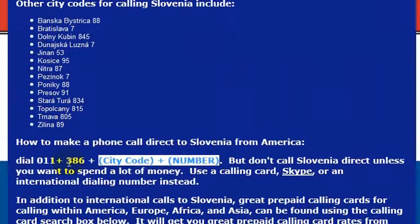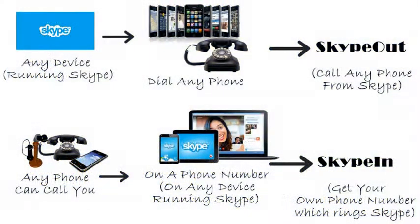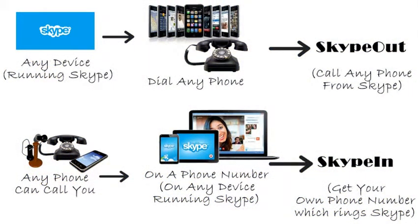The country code for Slovenia is 386, but I wouldn't really recommend calling direct — your phone company will charge you a lot of money. If you want to call a phone number, I really recommend using Skype.